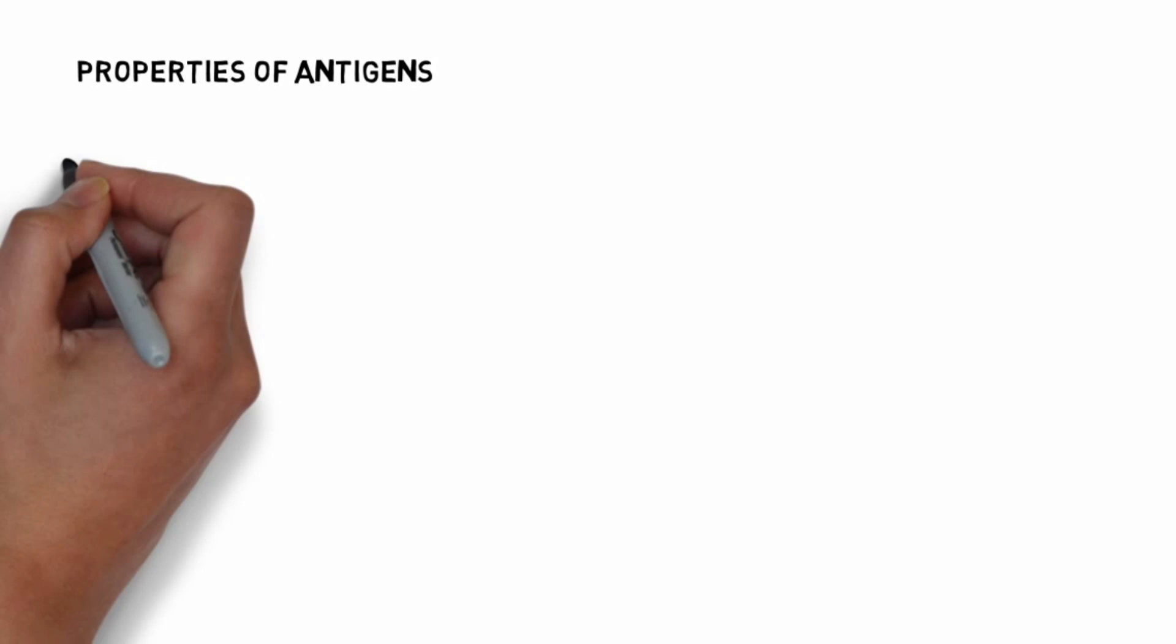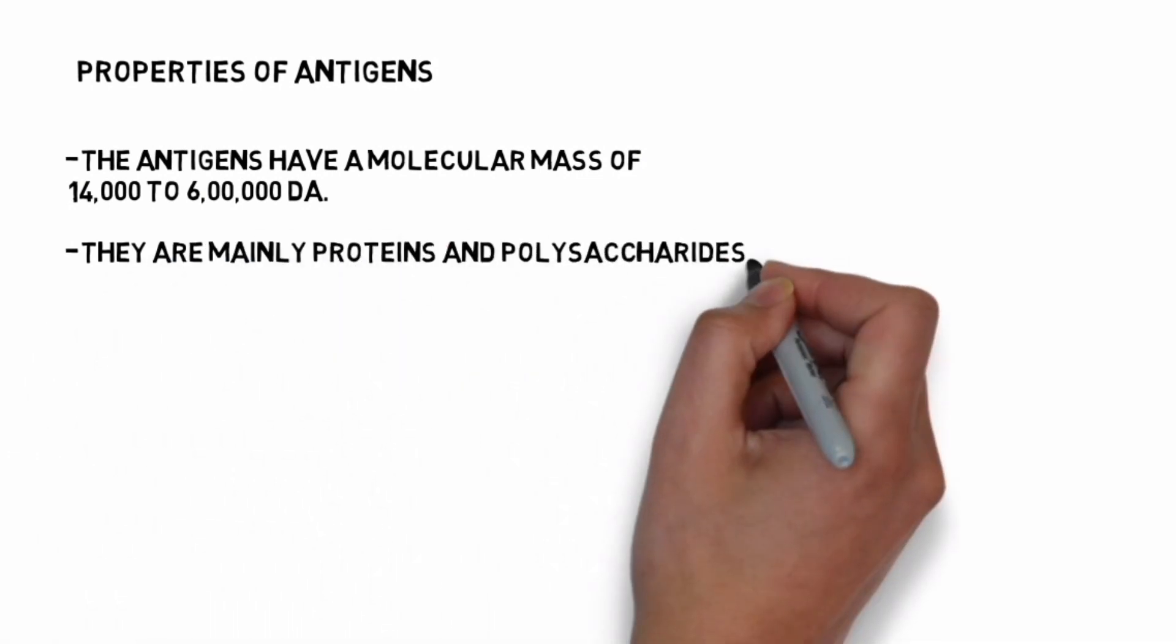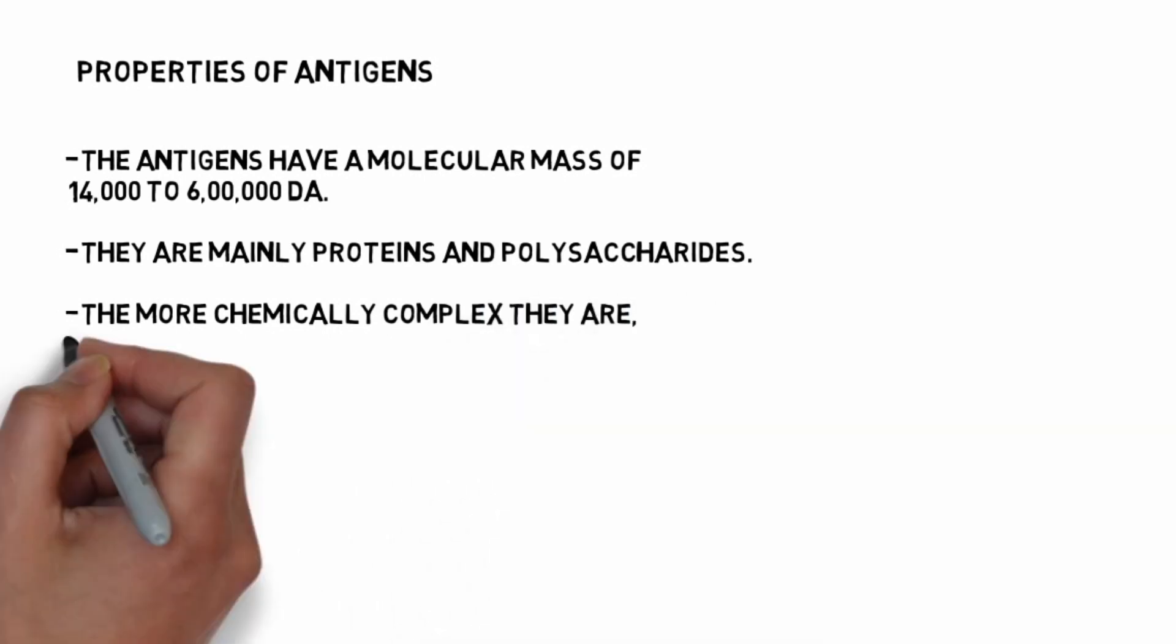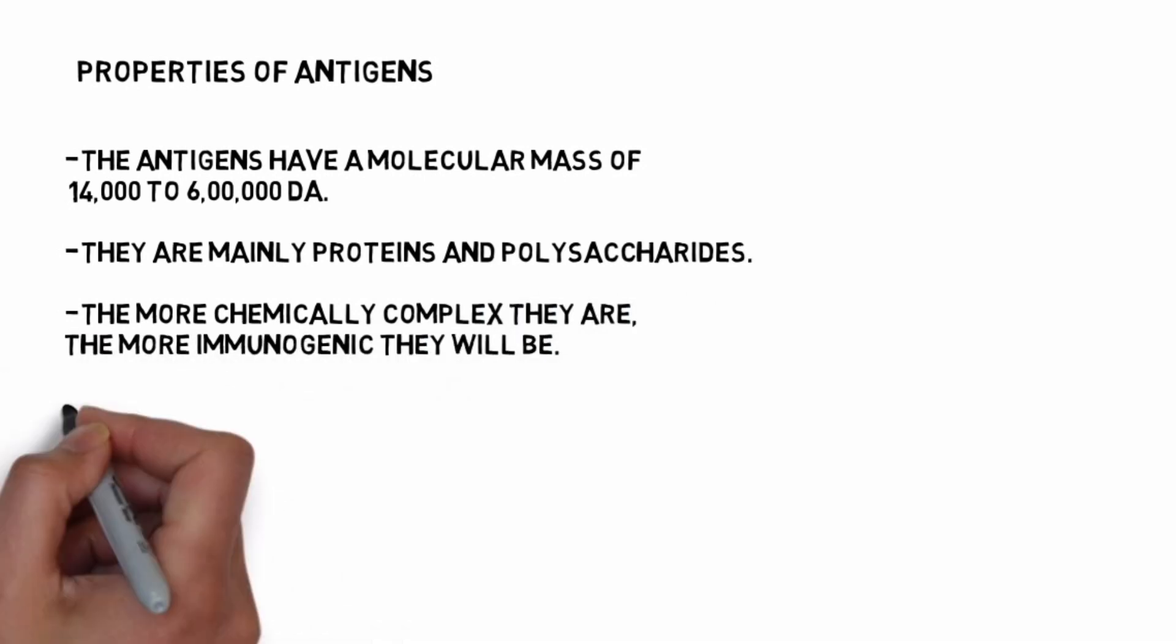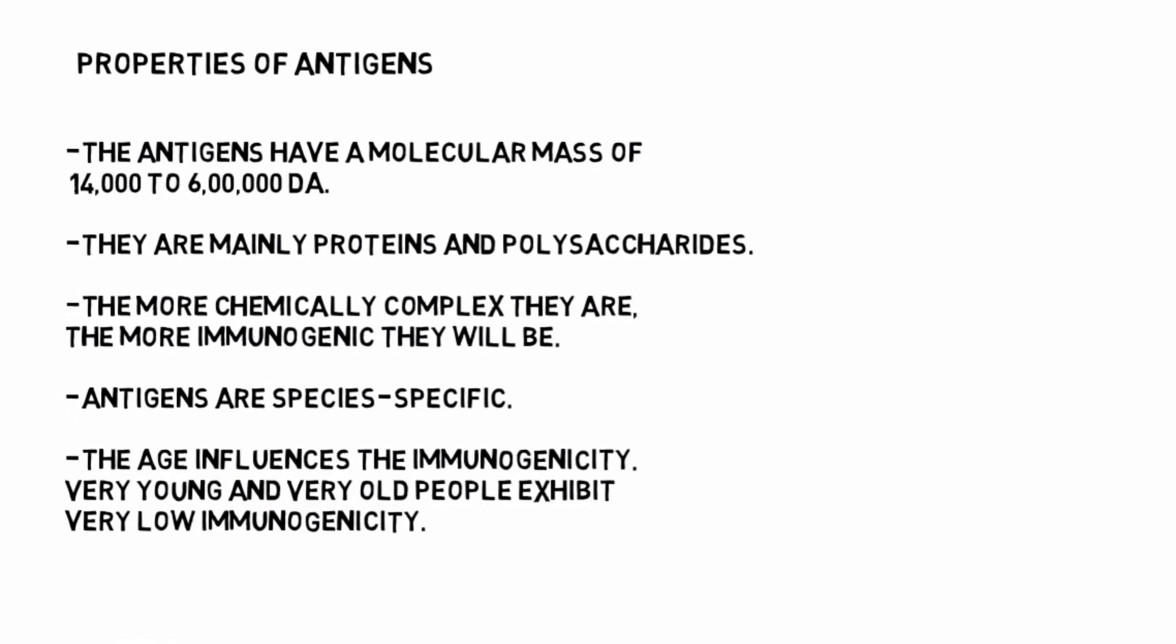Properties of antigens: The antigens have a molecular mass of 14,000 to 600,000 Dalton. They are mainly proteins and polysaccharides. The more chemically complex they are, the more immunogenic they will be. Antigens are species specific. Age influences immunogenicity - very young and very old people exhibit very low immunogenicity.